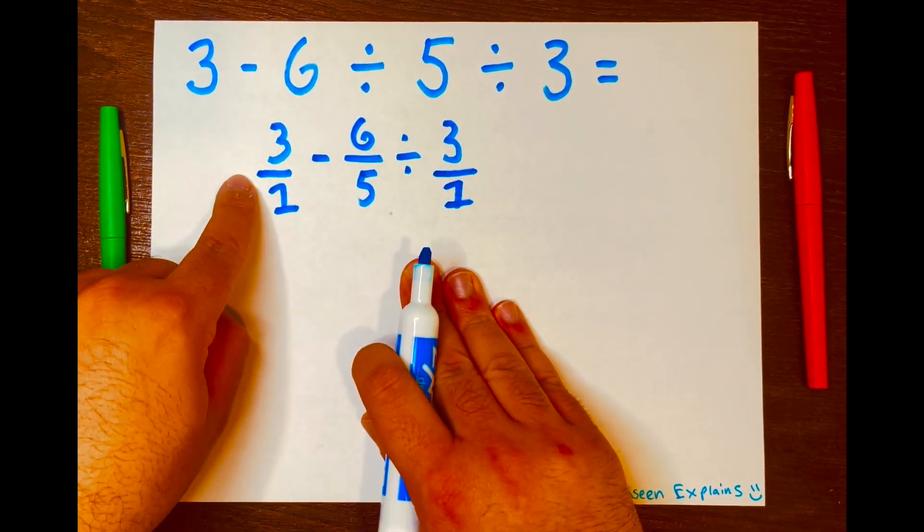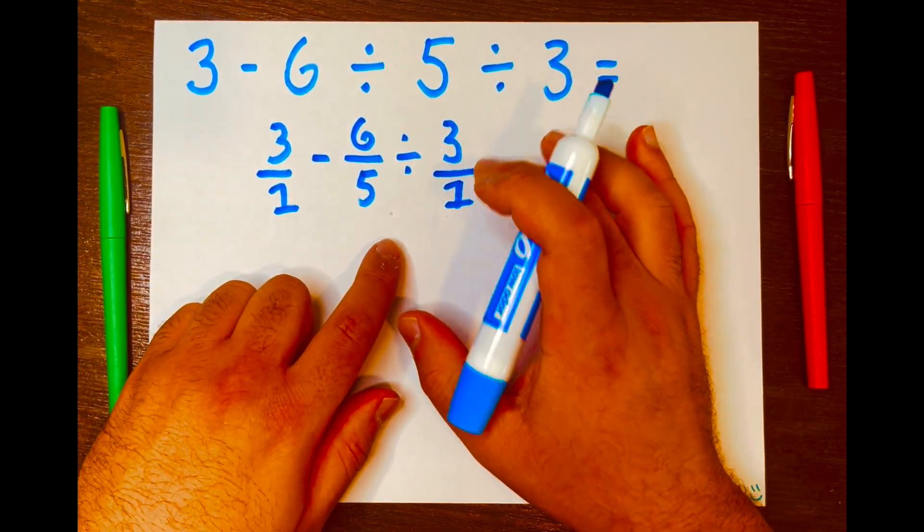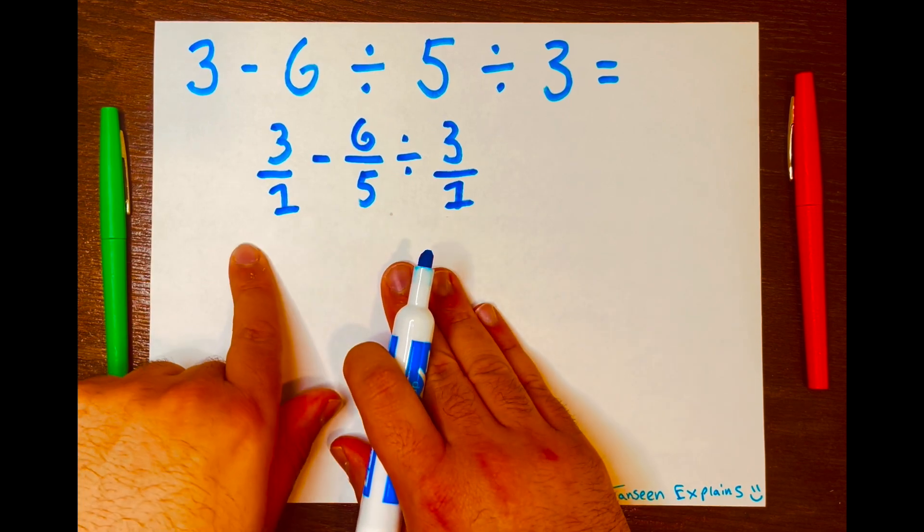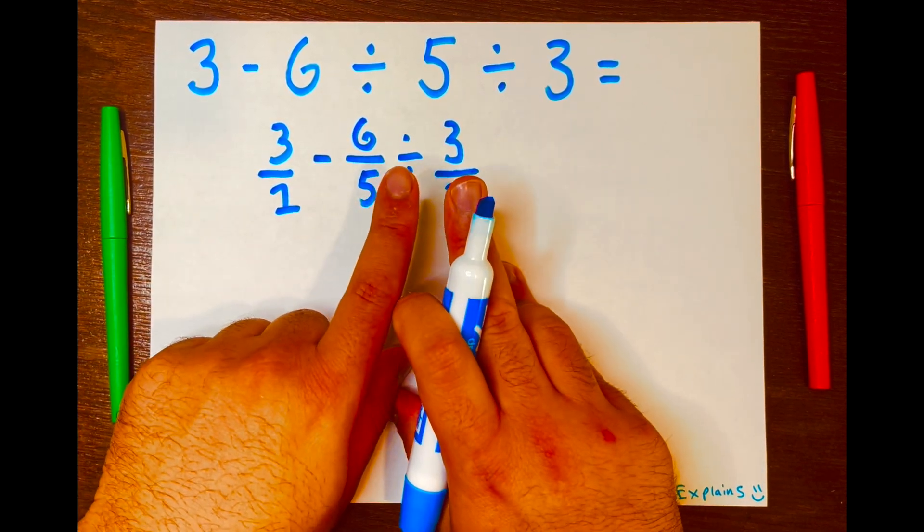And now we have 3 over 1 minus 6 over 5 divided by 3 over 1. Now reading from left to right, subtraction will not go first. It will be division.